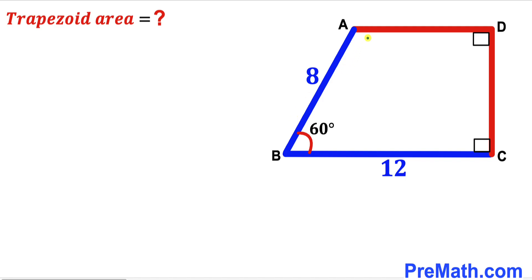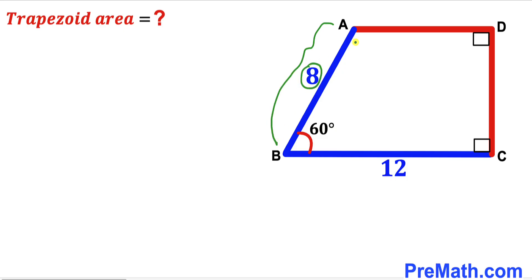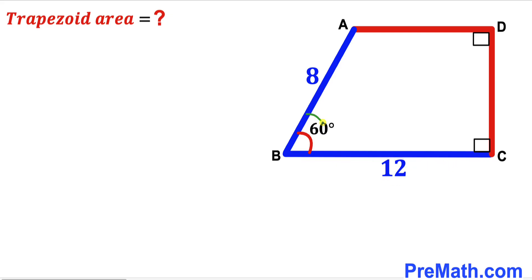Welcome to pre-math. In this video we have got trapezoid ABCD such that side AB is 8 units, the base BC is 12 units, angle ABC is 60 degrees, and these other angles are 90 degrees. Our task is to calculate the area of this trapezoid ABCD.